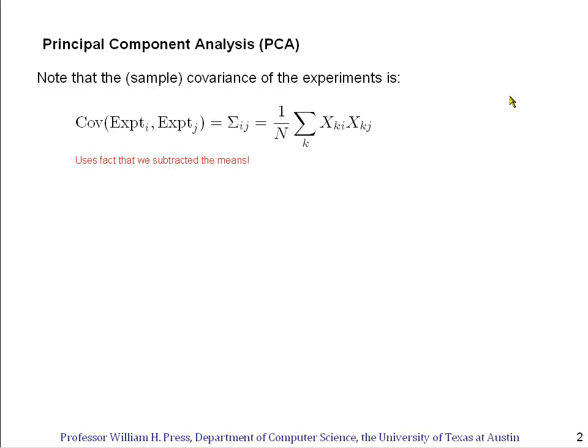The starting point is to notice that we can estimate the covariance of all the different experiments by just this combination of data matrices. The idea here is that the covariance between experiment i and experiment j would be, looking in the data matrix, we fix column i for one experiment, column j for the other, and then multiply the two values for any given gene k and sum over the genes. Taking the average gives us a sample estimate of covariance. This uses the fact that we subtracted the means off of all the experiments.